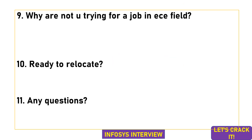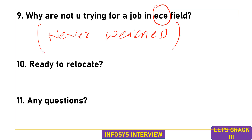He was asked: why aren't you trying for a job in the ECE field, since you are from that branch? My suggestion is: never expose your weakness while answering this question. Don't say things like 'I did not get a job in ECE' or 'there are not many opportunities in ECE.' Instead, give a positive answer — like 'I enjoy programming and coding, and I want to pursue a career in the software field.' Give sugar-coated answers and don't reveal your weakness.